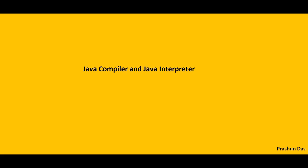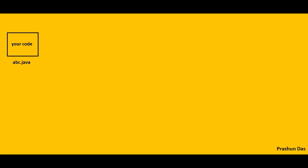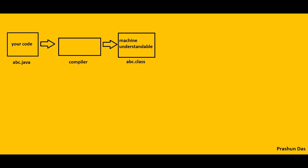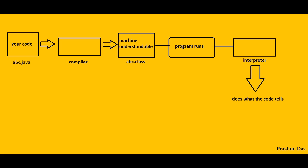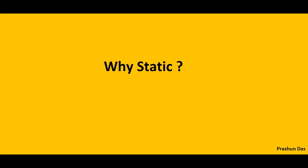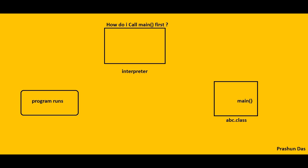Let's go through a small concept related to the Java compiler and Java interpreter. When you write your code and save it with a .java extension, the compiler takes this .java file and compiles it into a .class file. The interpreter comes into action when the program is run — it takes this .class file, reads it, and understands it so that it knows what to do further.